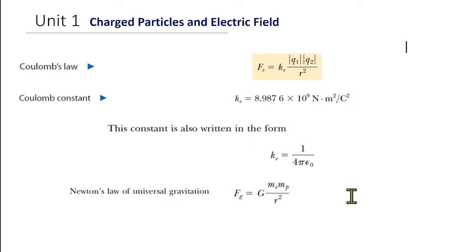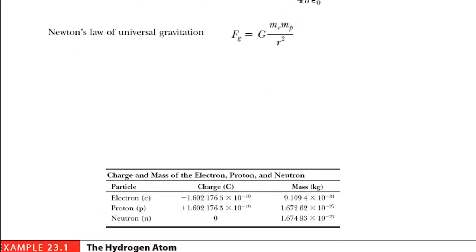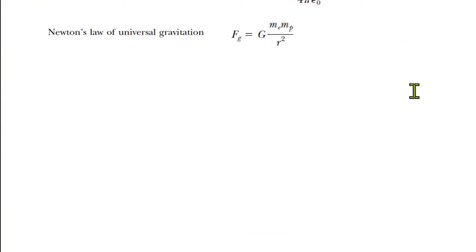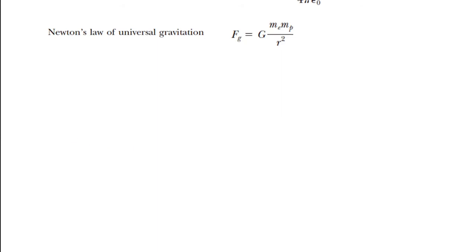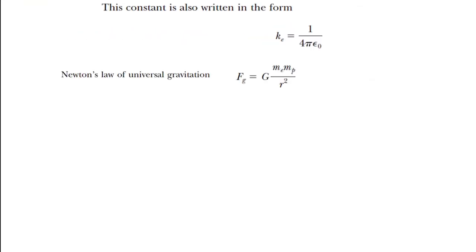First we have to understand: why is it r² and not just r? Is this obvious or is it something we can only verify experimentally? We are somewhat comfortable with what a field is — for example, the gravitational field points downward, that's g. All of these forces are called field forces. This r² in the denominator is only true if these things are point masses or point charges.